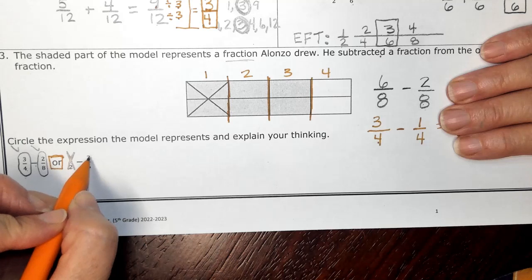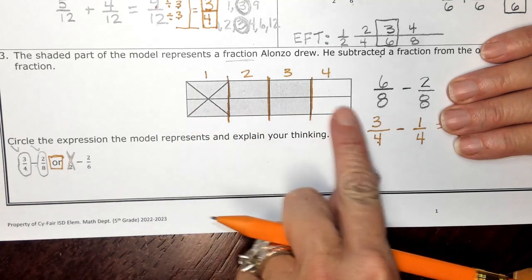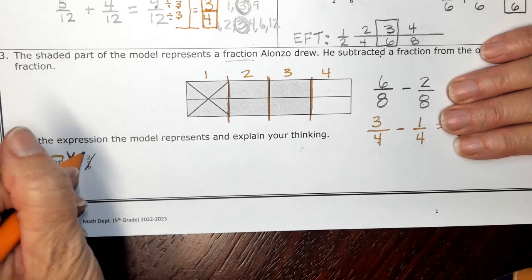And it's not going to be called two sixths because we didn't have just six pieces. We had eight. So I'm going to go ahead and cross that out.